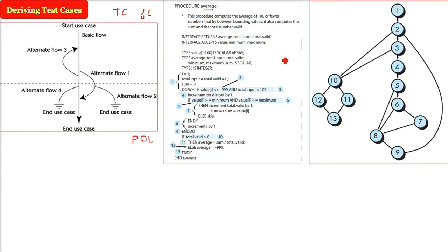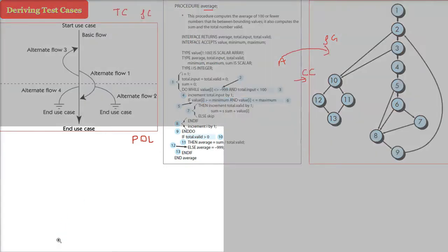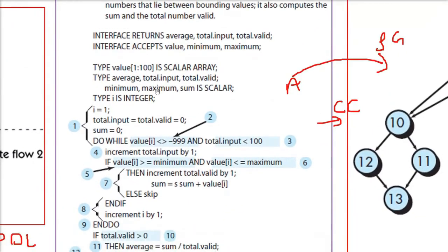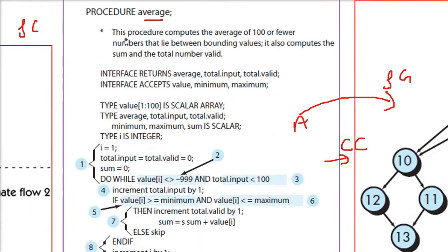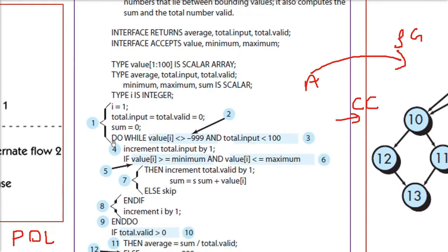You may ask why we are making a graph and why we are not just using the code or the algorithm directly. You will see that it is easy to find out from this graph the cyclomatic complexity, and this cyclomatic complexity is the upper bound of the number of test cases we need to generate. The underlying idea is that all the paths should be executed at least once. So we have to make a control flow graph with certain nodes and edges.